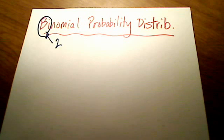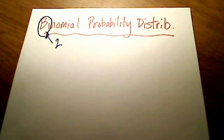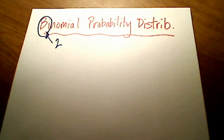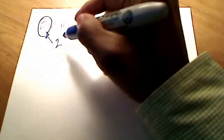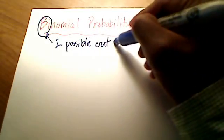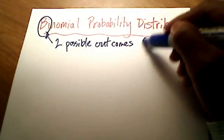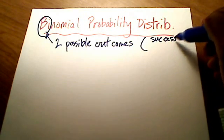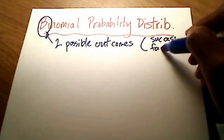When you hear the phrase 'binomial probability distribution,' think of two possible outcomes: something called a success and the other outcome, a failure.